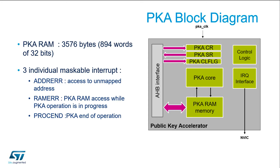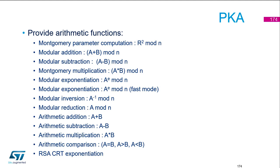The normal interrupt indicates the end of an operation. You can then retrieve the result from PKRAM when you receive that interrupt and check the flag in the status register. The PKE provides many arithmetic functions; the most interesting for RSA is modular exponentiation.